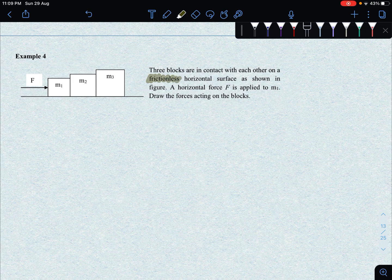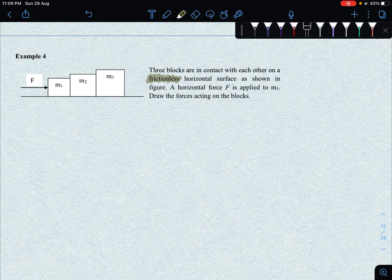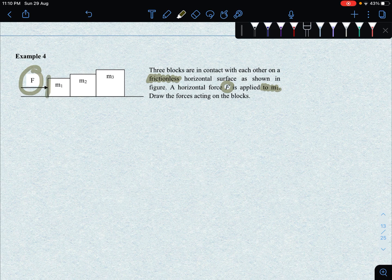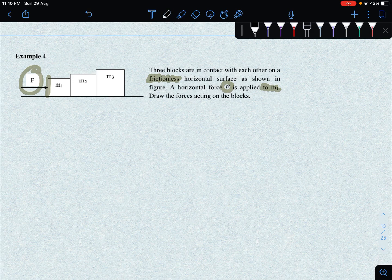We have a surface which is frictionless, which means it is smooth with no presence of friction. As shown in figure, a horizontal force F is applied to M1. So you are applying a force of F on M1 here. The question is to draw the forces acting on the blocks, to draw free body diagram acting on the block.